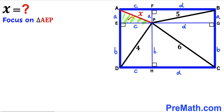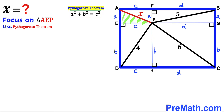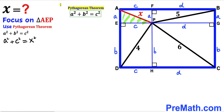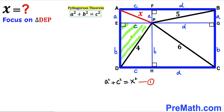Now let's focus on right triangle AEP and apply the Pythagorean theorem. In this case x is the diagonal, while lowercase a and lowercase c are the two legs. Filling in the formula, we get a² + c² = x². I will label this as Equation 1.